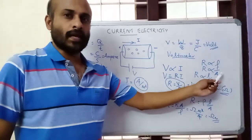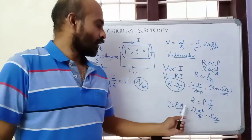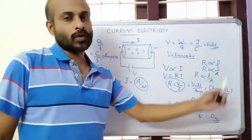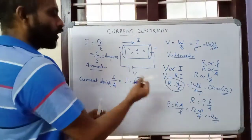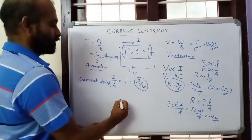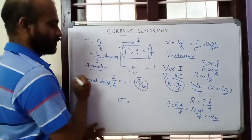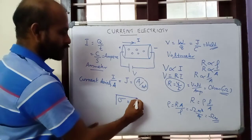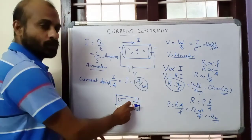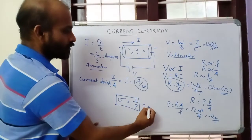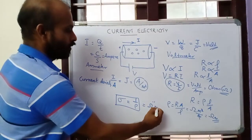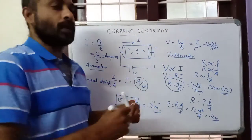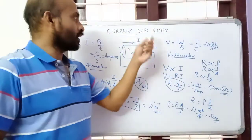So resistance depends on three factors: length (directly related), area cross section (inversely related), and the material of the conductor, represented by the resistivity. Ohm meter is the unit of resistivity. The reciprocal of resistivity is called conductivity. Conductivity sigma equals one by rho. Sigma is conductivity, rho is resistivity. The unit of conductivity is ohm raised to minus one, meter raised to minus one.